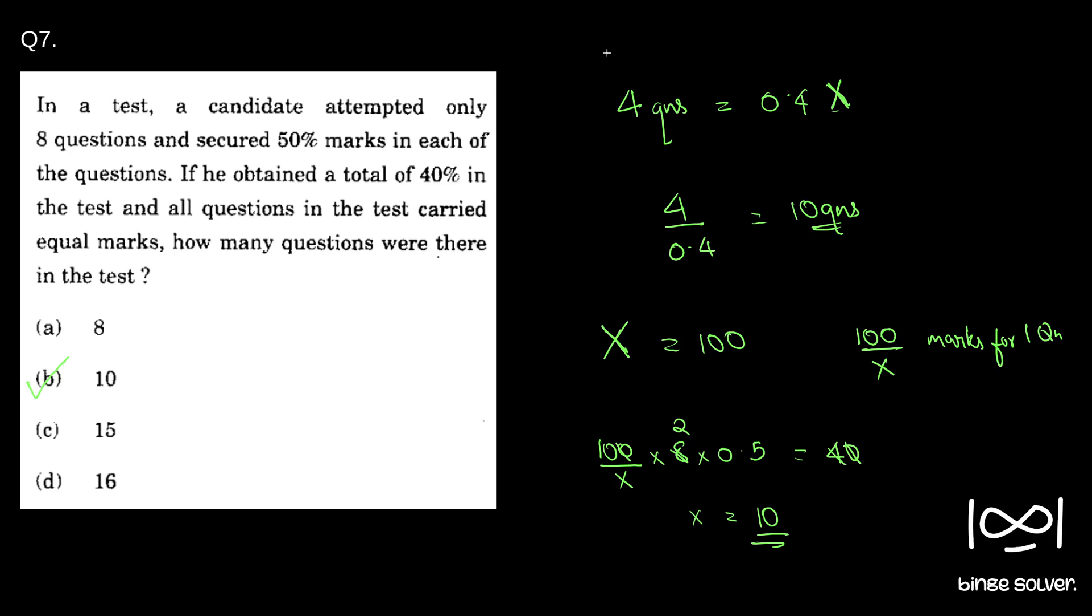In case this logic doesn't strike, you can use the formal method. Since it is given 50% and 40%, easily we can mentally calculate and arrive at the answer at a very fast pace within few seconds. If you didn't understand or are not able to do this, do it in the formal manner. Just take X as the total number of questions, assign some marks, and solve. The solution to question 7 is B.